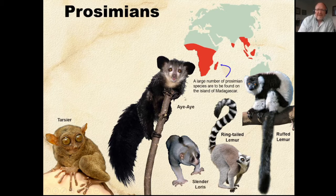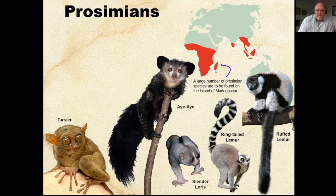Here we have some prosimians: the tarsier or bush baby, and then the aye-aye, which I'll also show you — that's from Madagascar. A large number of prosimian species are found on the island of Madagascar. It could be that due to the isolation of these animals on Madagascar, they weren't out-competed by old world or new world monkeys. Madagascar has amazing wildlife because it was like a laboratory incubator due to its isolation. We also have the ringtail, the slender loris, and the ruffed lemur.